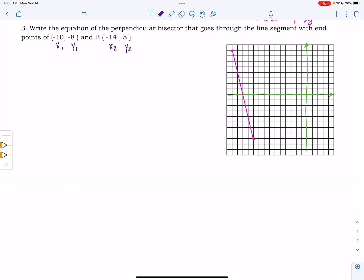So a bisector means that this is a line segment that's going to cut this line segment right in the middle. So we know just from that point that we are going to need the midpoint.